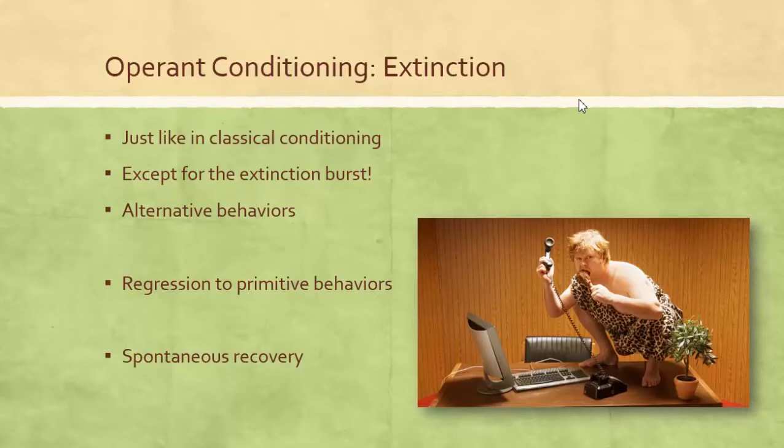Just like in classical conditioning, except there's a difference. Remember that in classical conditioning, extinction means the conditioned stimulus is no longer followed by the unconditioned stimulus. In operant learning, extinction means that a previously reinforced behavior is no longer followed by reinforcers.